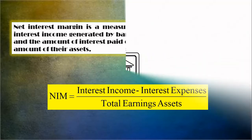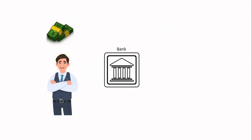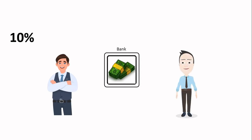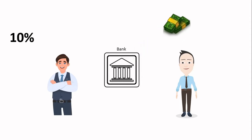Now let's see how banks usually generate interest income and interest expenses. Suppose David is a guy who has a surplus amount of money in hand, so David deposits his cash in the bank. In return, the bank will give David a 10 percent interest rate on the deposited amount. Another guy, Beckham, is in a deficit unit, so Beckham needs money from the bank. The bank will give Beckham the amount that David deposited, and in return Beckham will give the bank interest.